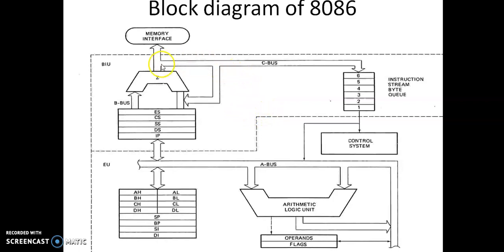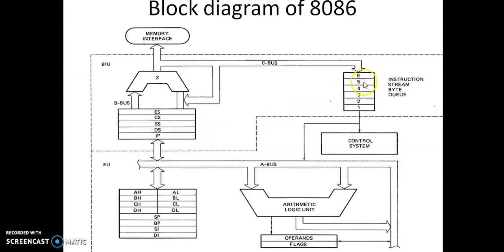Coming to the main components of the bus interface unit, there are three main components. The first component is called segment registers — these four segment registers. The next one is called the instruction pointer, and the next one is called the instruction byte queue.